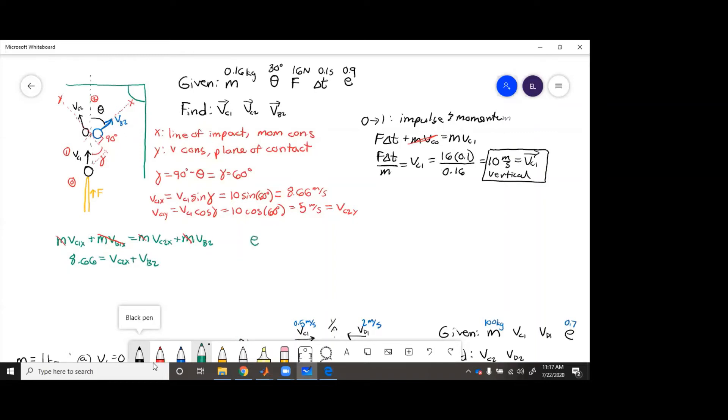And then in the e equation, we've got e equals negative vc2x minus vb2 over vc1x minus 0.